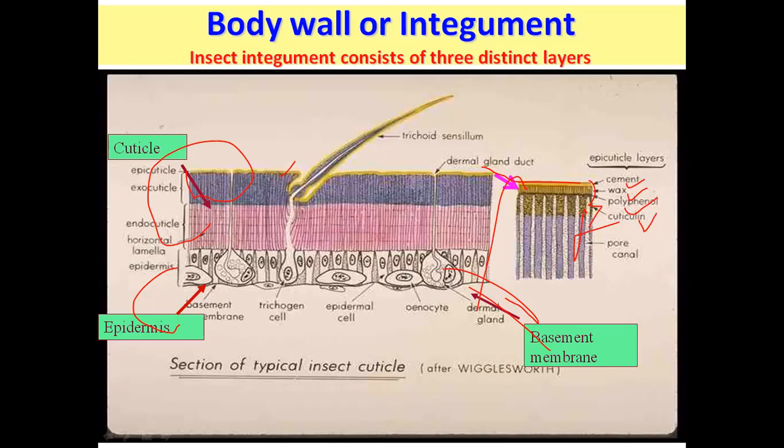The wax layer is another prominent layer and contains long-chain hydrocarbons. It acts as a waterproof layer of the insect body wall, preventing water loss from the body. That is why the wax layer is important.